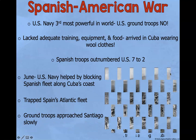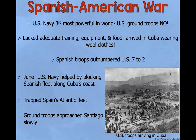The US Navy was the third most powerful in the world, but the ground troops were not. The ground troops lacked adequate training, equipment, and food, and they arrived in Cuba wearing wool clothes — Cuba is very hot. They were also outnumbered; Spanish troops outnumbered the US seven to two. In June, the US Navy helped by blocking the Spanish fleet across Cuba's coast and trapped Spain's Atlantic fleet. Ground troops approached Santiago slowly.